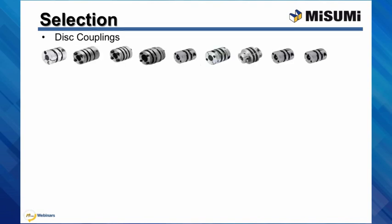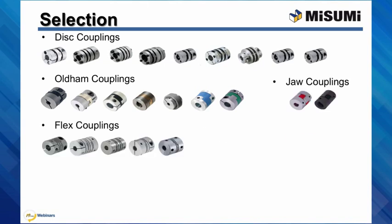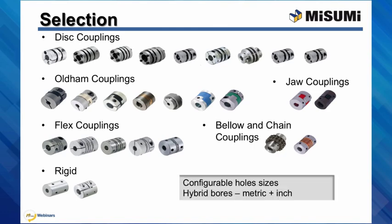Misumi offers a variety of couplings, including disc, Oldham, jaw, flex, bellow, chain, and rigid couplings. What separates Misumi from other suppliers is that coupling bore size is configurable, and we also offer hybrid bores, meaning one side can be metric while the other can be inch bore size. In the next few slides, we'll cover some major characteristics of the coupling groups.